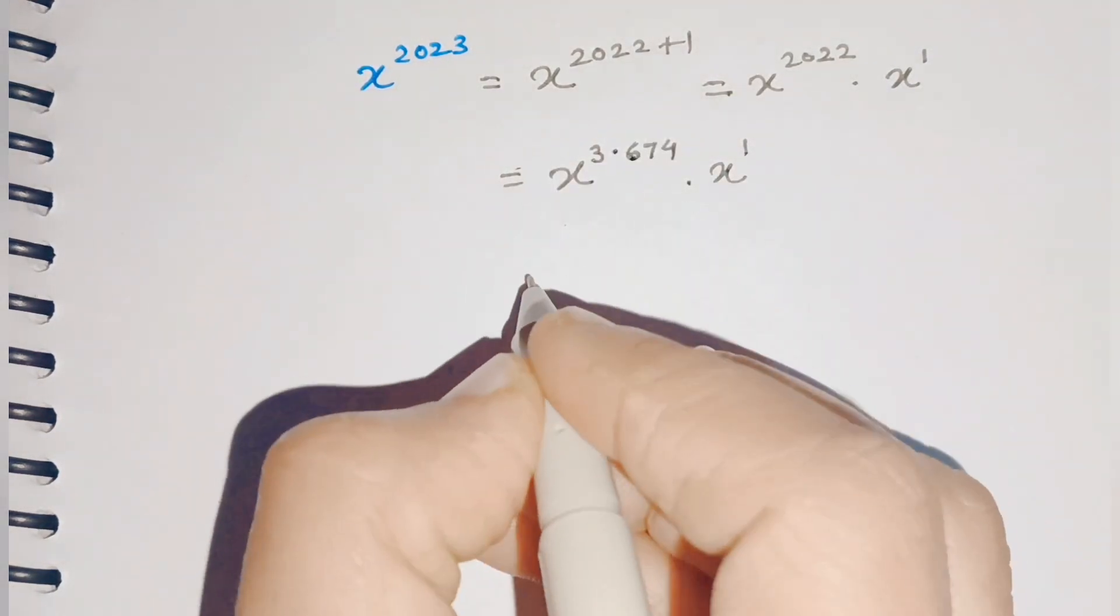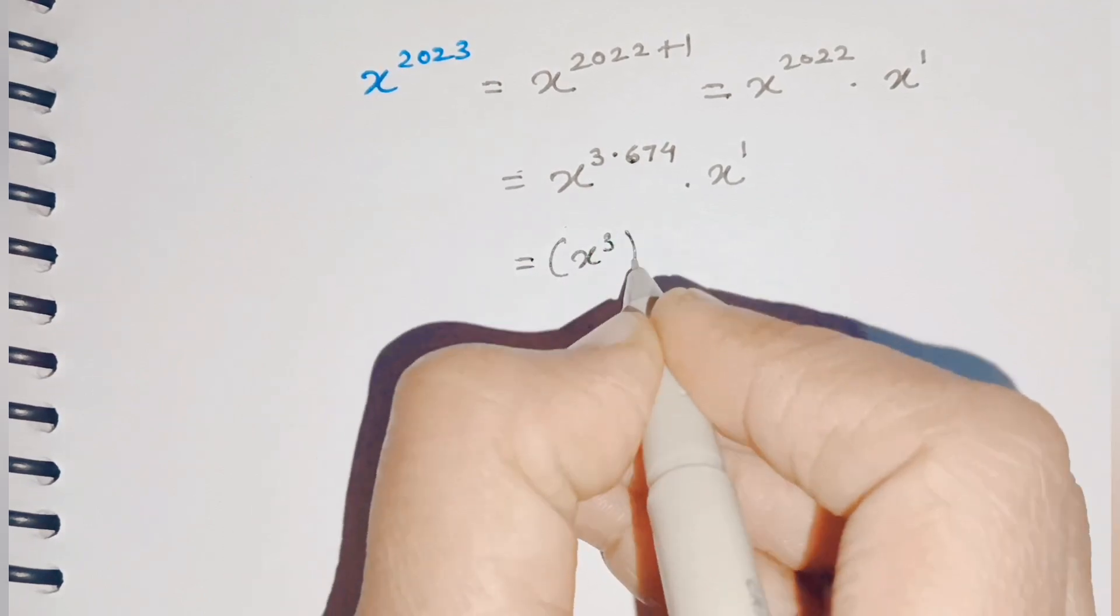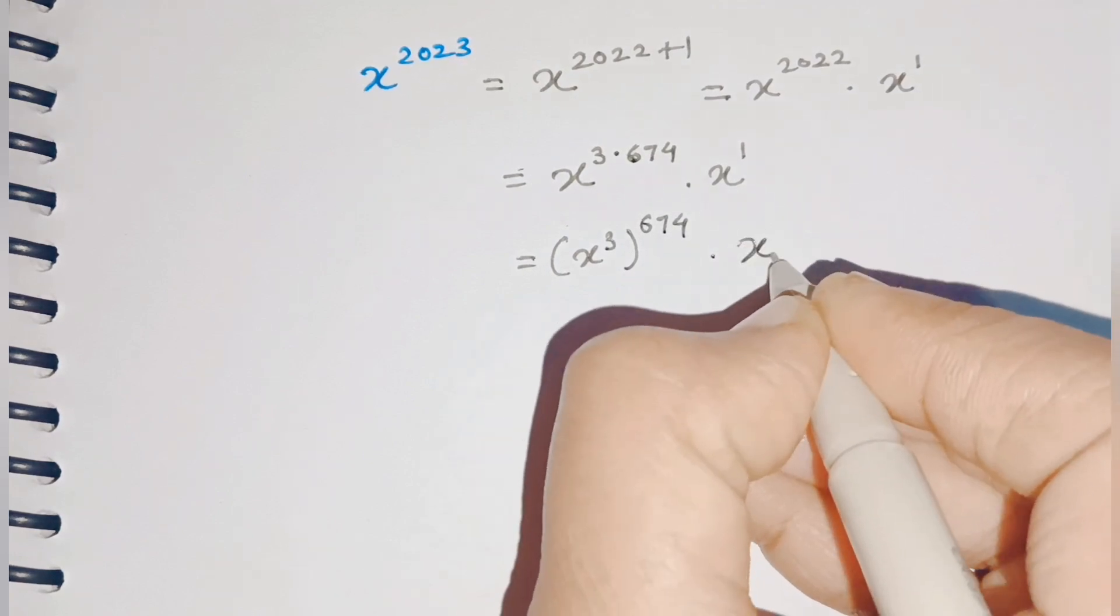Let's apply the power of power rule. So I can take x³ in a bracket, whole raised to 674, times x^1 which is just x.